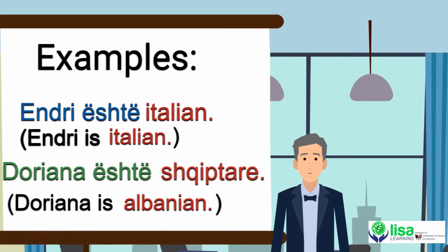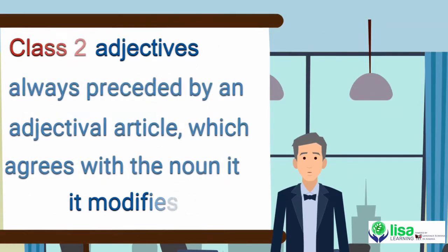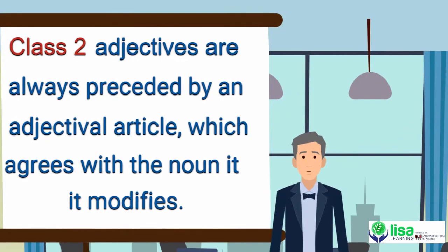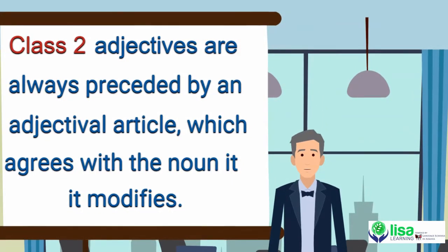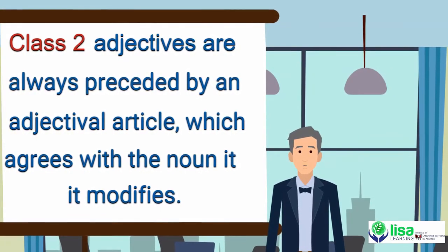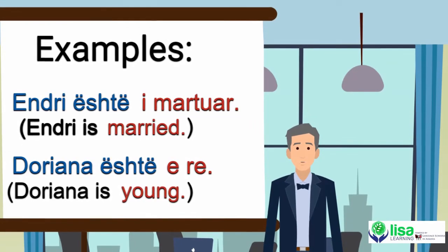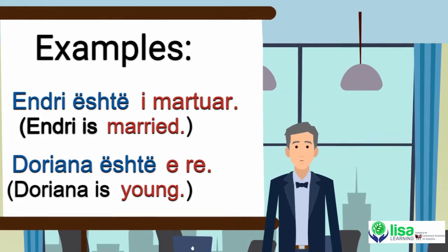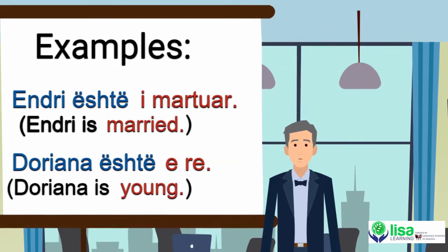Examples of Class 1 adjectives: Endri është Italian; Doriana është Shqiptare. Class 2 adjectives are always preceded by an adjectival article which agrees with the noun it modifies. Examples: Endri është i martuar; Doriana është e re.